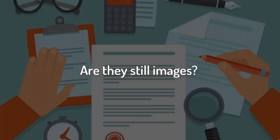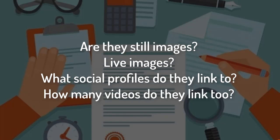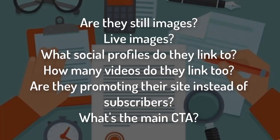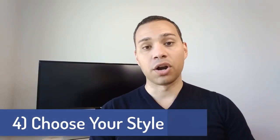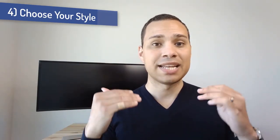Here are the questions you want to be asking yourself as you analyze what to put on your end screen: Are they using still images or live images? What social profiles do they link to, if any? How many videos do they link to at the end? Are they promoting their site or trying to get more subscribers? Are they trying to get more views by just having videos up there? What's the main call to action? Are they just talking and continuing the video with end screen elements popping up, or do they have a completely separate video element that pops up at the end? Once you've answered those questions, it's time to make a decision: are you going to have a live outro, or a kind of animated templated outro?